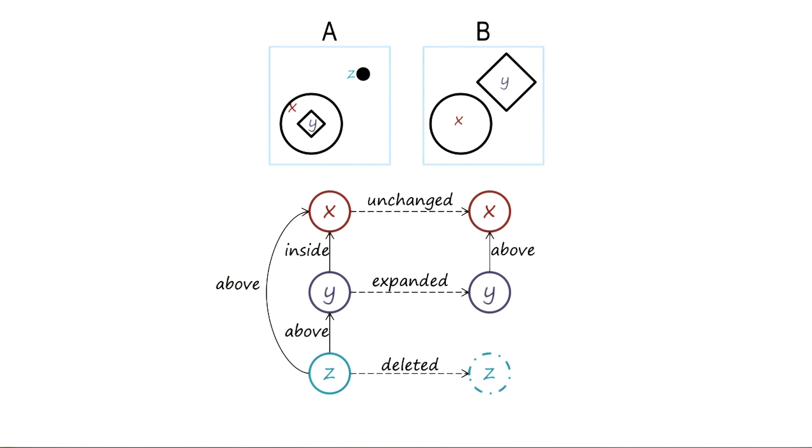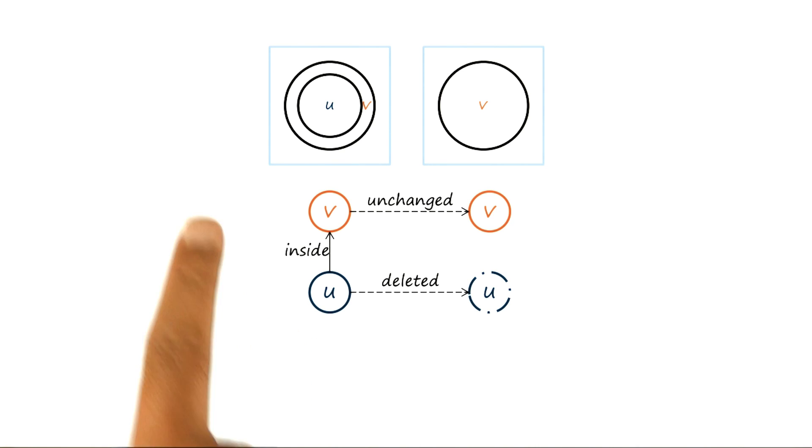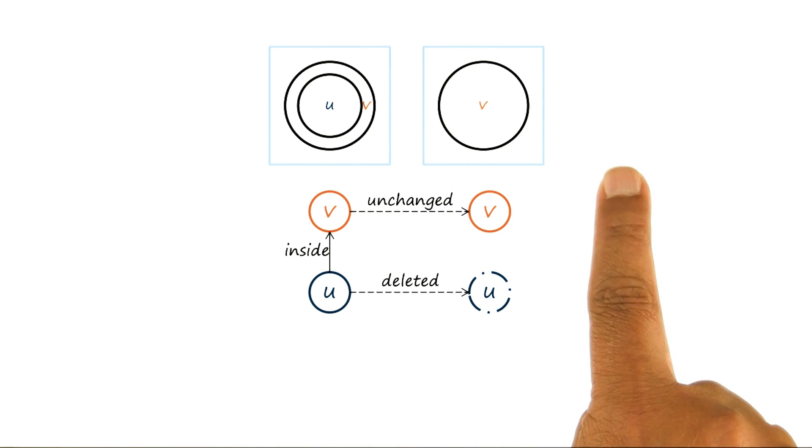In principle, we can construct semantic networks for much more complicated images, not just A and B. Here is another example of a semantic network for another set of images. Once again, we have the objects and the relationships, and then the relationship between the objects in the first image, and that in the second image.